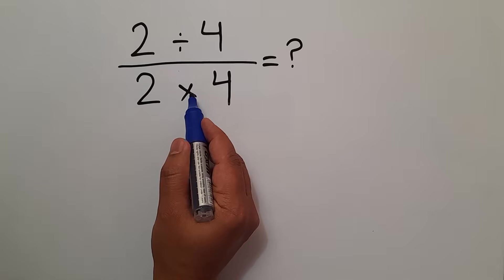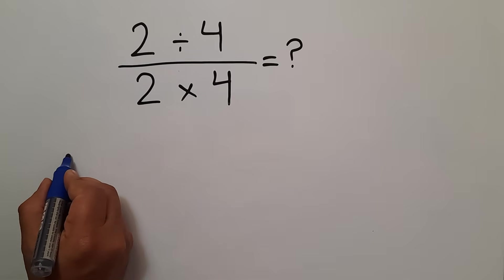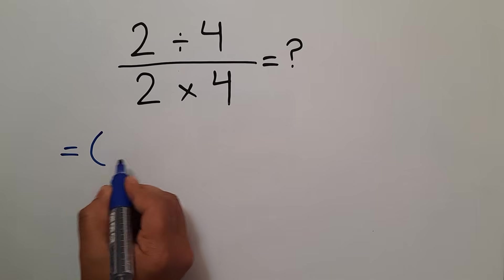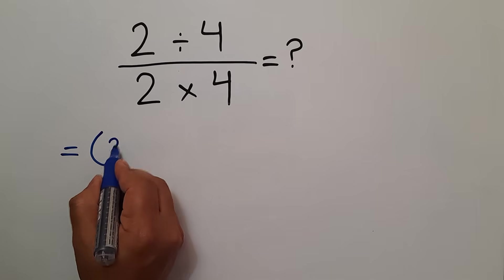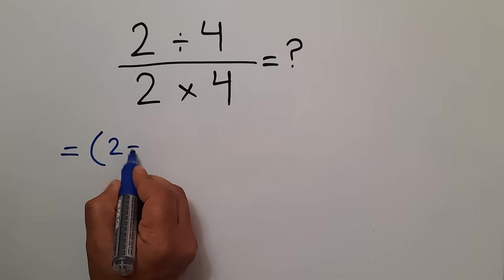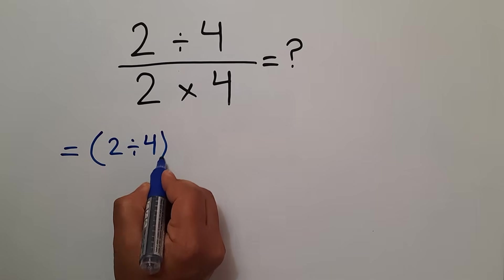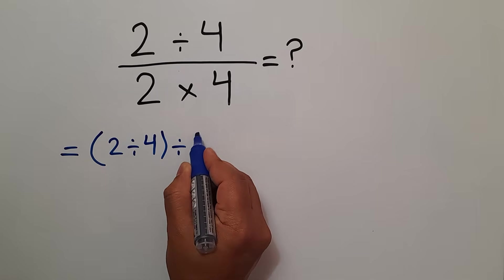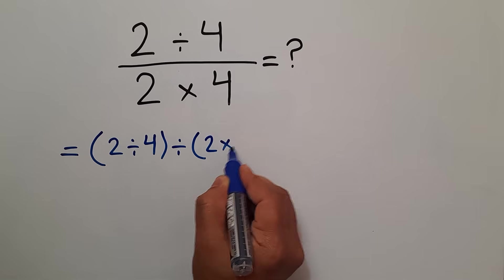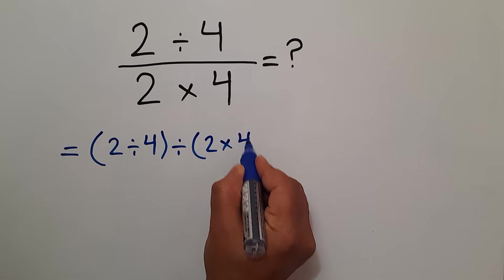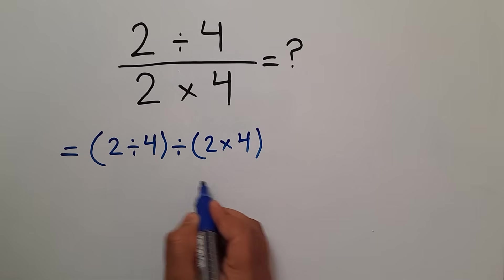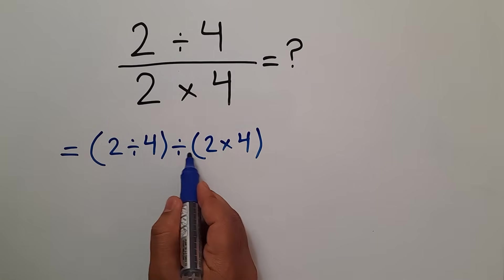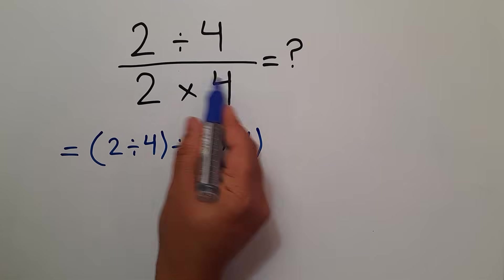Instead of this fraction, we can write: parentheses 2 divided by 4, then divided by parentheses 2 times 4 — the numerator divided by the denominator.